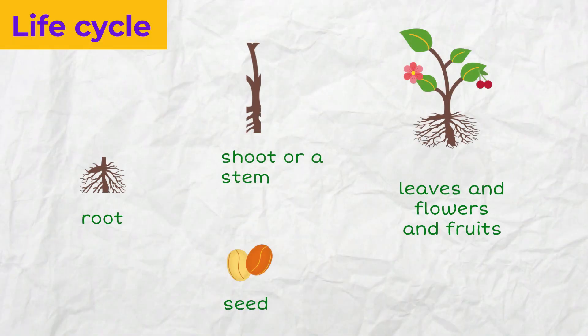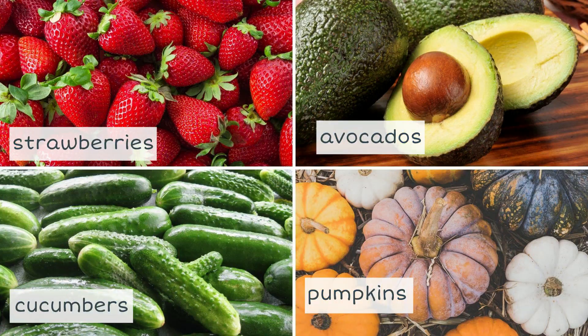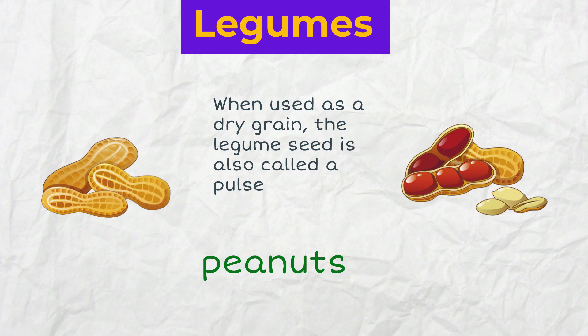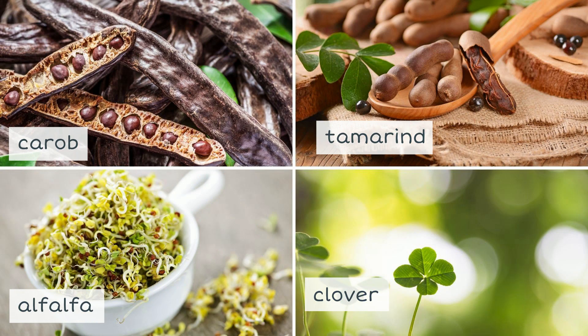By life cycle we understand the process of plant development from seed to seed. A root grows out of a seed, then appears a shoot or stem which produces leaves and flowers and fruits that produce seeds. Because botanically speaking only fruit can have seeds, there is some confusion in defining certain plants. For example, strawberries, avocados, cucumbers and pumpkins are fruits. Peanuts are not nuts but legumes, related to beans and lentils. When used as a dry grain, the legume seed is also called a pulse. Other well-known legumes include soybeans, lentils, lupins, mesquite, carob, tamarind, alfalfa and clover.